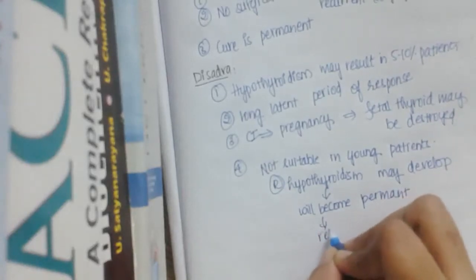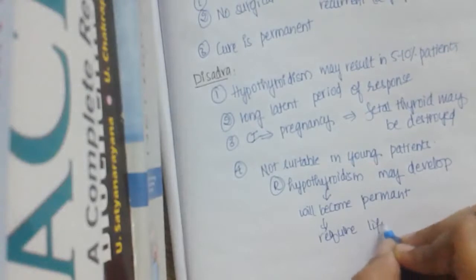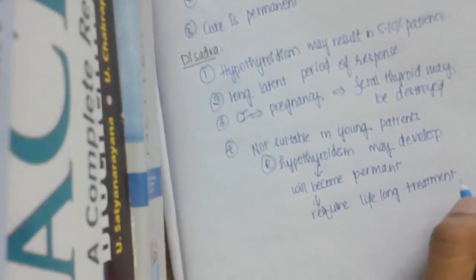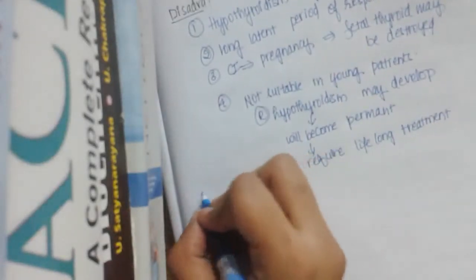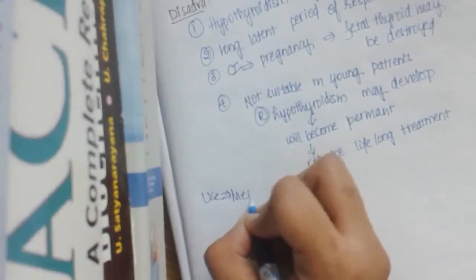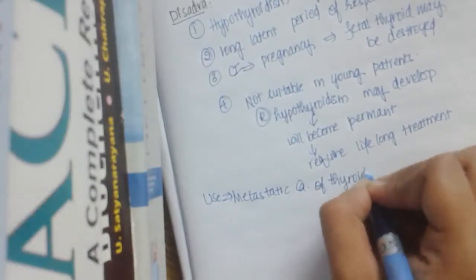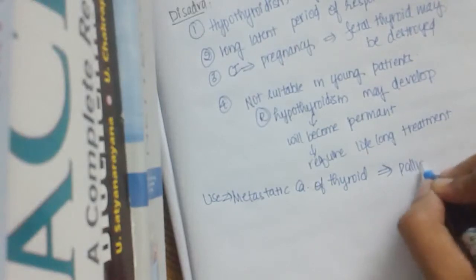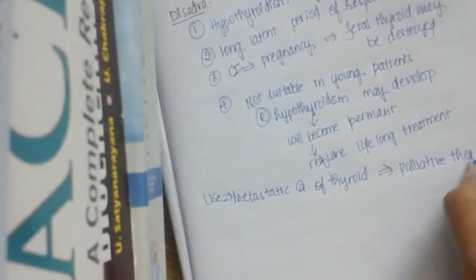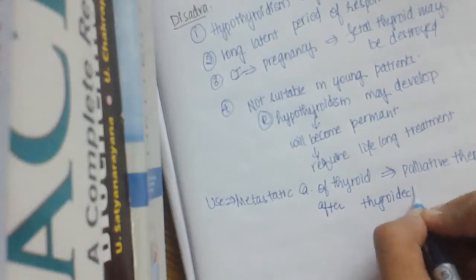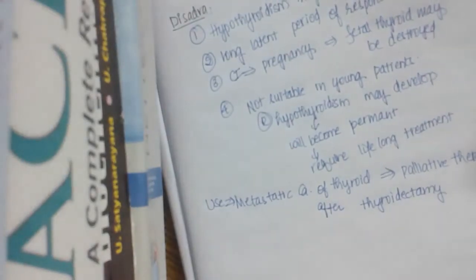In use in metastatic carcinoma of thyroid, this radioactive iodine is used as a palliative therapy that too after thyroidectomy. These are the disadvantages of using radioactive iodine as a therapy.